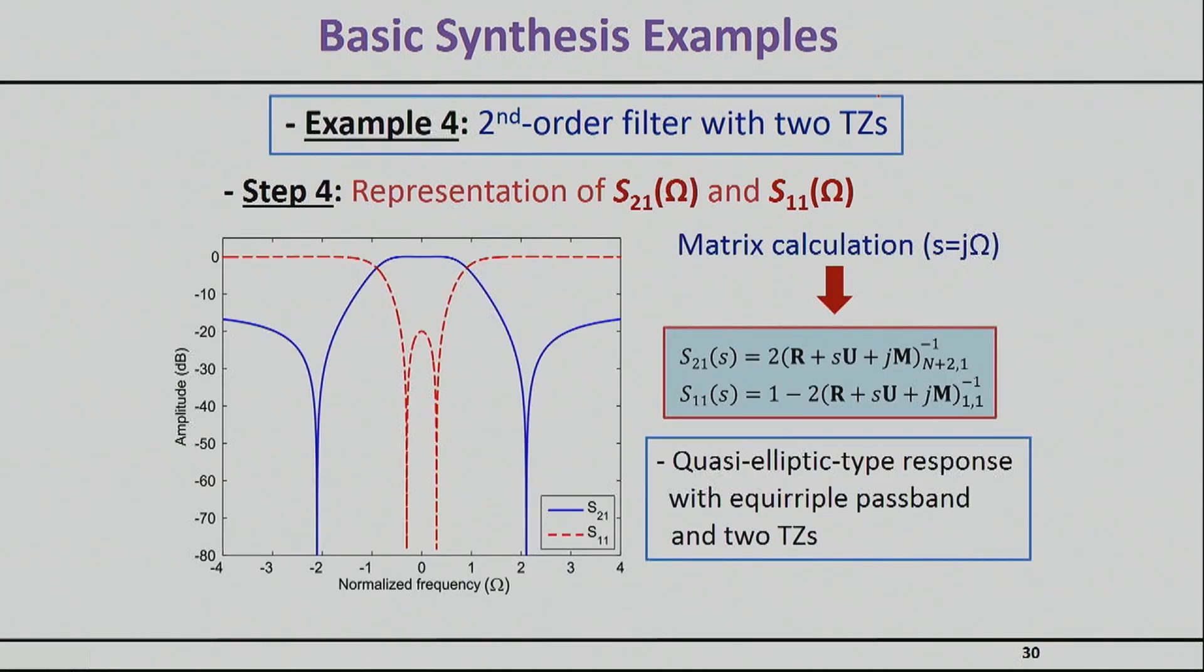Now indeed, if you go ahead and you plot that in the normalized domain—remember we're still doing things in the omega equals one domain, we haven't seen scalings yet—you will very clearly see the two reflection zeros here that are due to the poles, and the two transmission zeros right here.